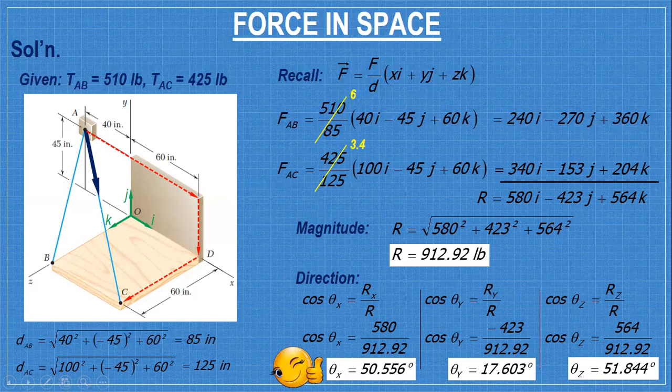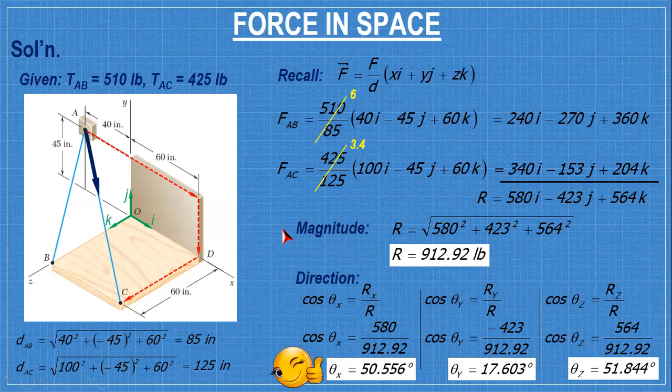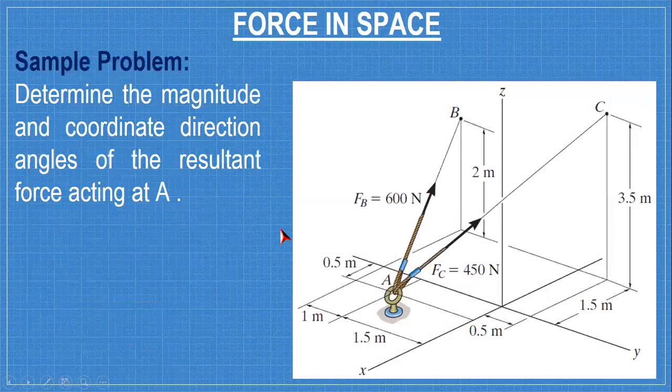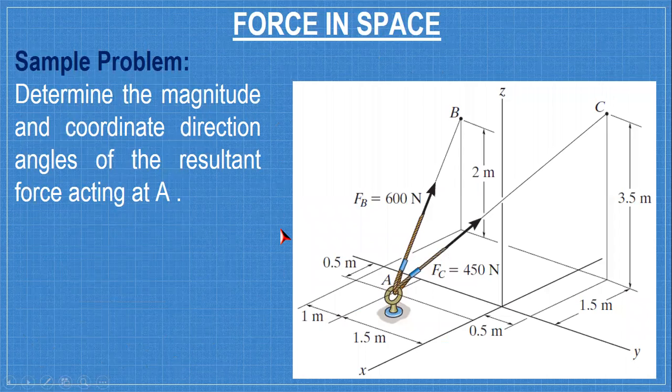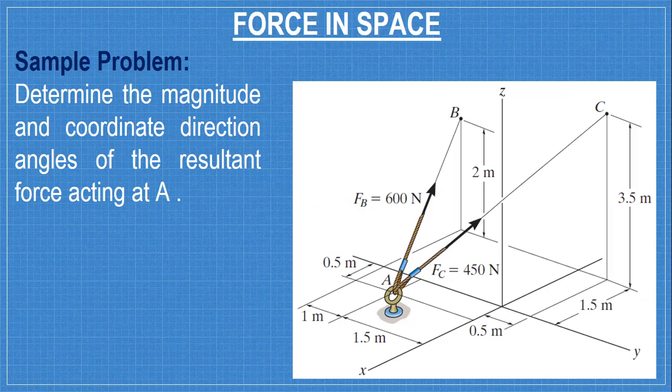So this is how you get the resultant of concurrent forces in space. Just make sure that the distances are correct, and then after that, that is your resultant. Just make sure that no force is omitted and no force is counted twice.